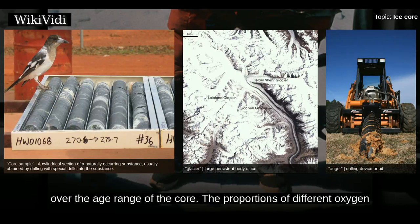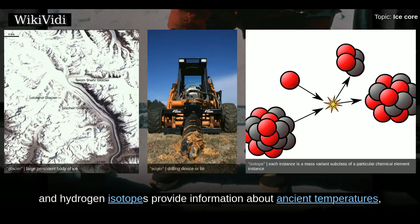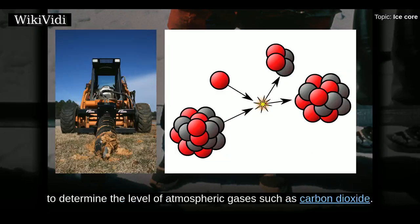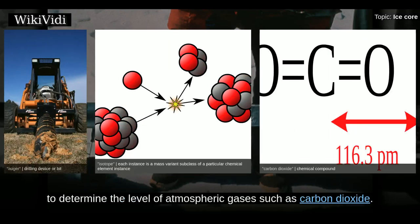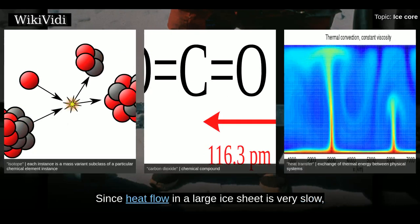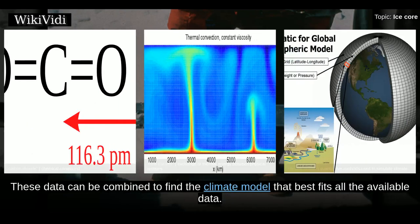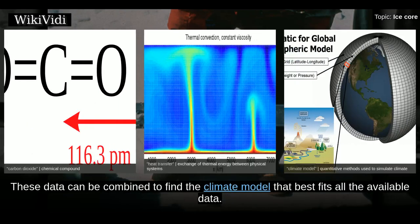The proportions of different oxygen and hydrogen isotopes provide information about ancient temperatures, and the air trapped in tiny bubbles can be analyzed to determine the level of atmospheric gases such as carbon dioxide. Since heat flow in a large ice sheet is very slow, the borehole temperature is another indicator of temperature in the past. These data can be combined to find the climate model that best fits all the available data.